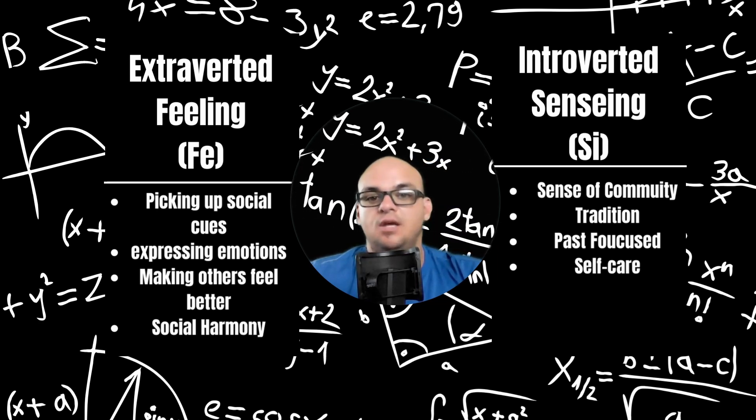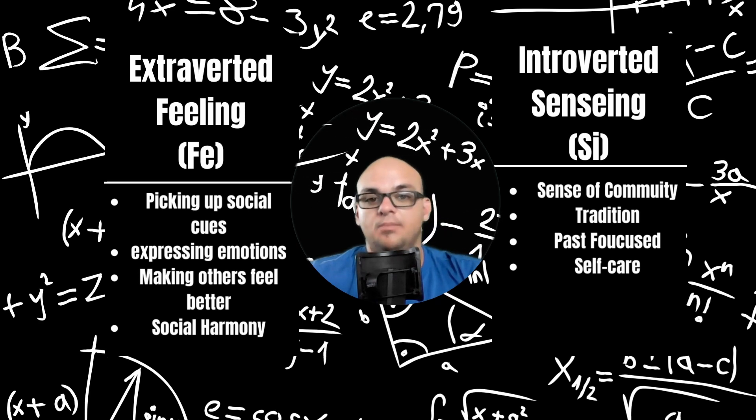FE is about picking up on social cues and taking emotions of others into consideration. So, INTJs can be oblivious to these sort of things. And if you're an INTJ with AVPD, this is even more exacerbated.